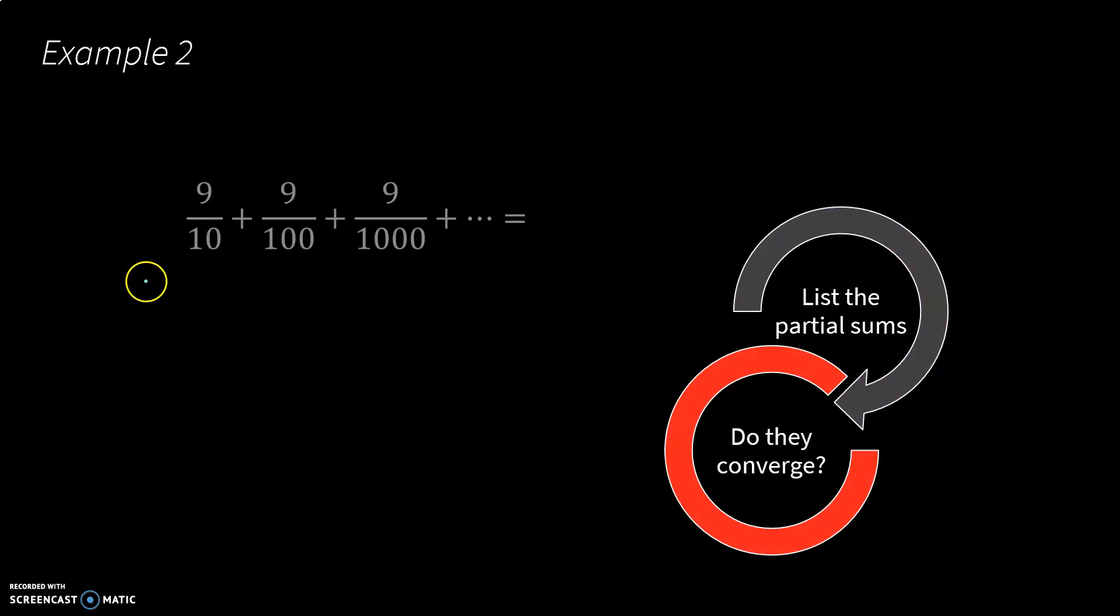So here's another example. If we have our first partial sum would be 9 tenths. Our second partial sum, if I got a common denominator, would be 90 plus 9, so 99 one hundredths. Our third one would be 999 one thousandths. And then it's a good idea to look at what would the nth one be. Well, the nth one would be 10 to the n in the denominator and 10 to the n take away 1 in the numerator.